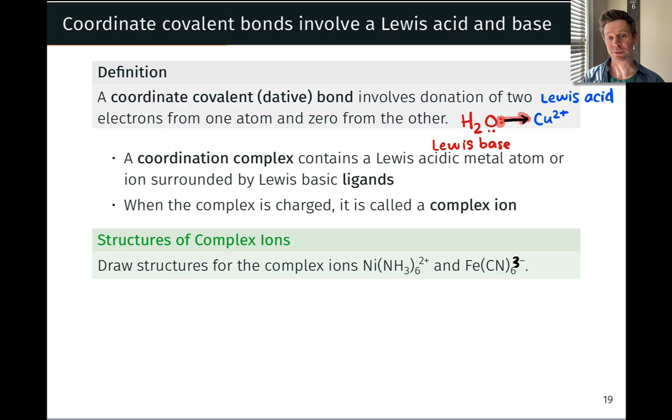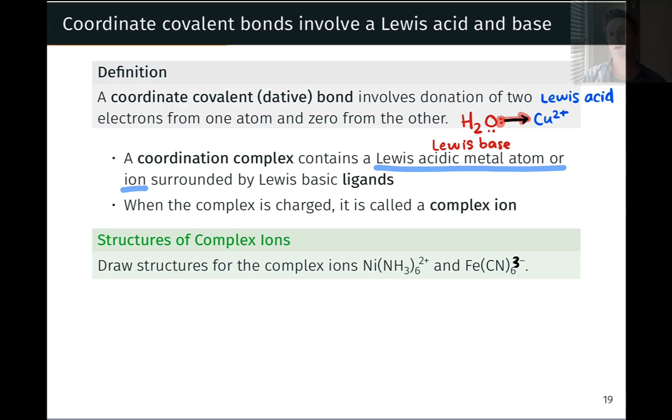A coordination complex contains a Lewis acidic metal atom at the center, and most commonly more than one, multiple copies of Lewis basic atoms that are coordinating to the metal center. Those Lewis basic atoms or groups or molecules are known as ligands. A coordination complex contains a Lewis acidic metal atom or metal center, as we'll often refer to it. The metal center is often a cation, but it can also be neutral. Although the metal center is often cationic, neutral metal atoms can also be Lewis acidic in many cases, so you'll see neutral atoms in coordination complexes at times as well.